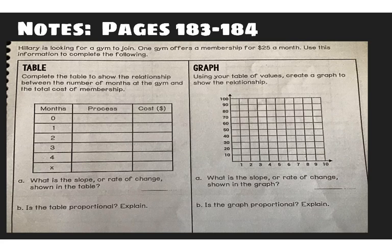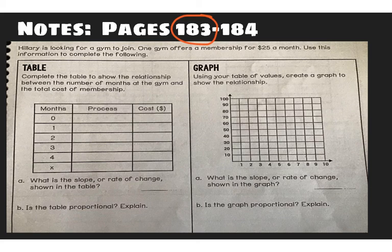Okay, let's try a problem with this. So this is also on page 183, just at the bottom. It says, Hillary is looking for a gym to join. One gym offers a membership for $25 a month. Use this information to complete the following. So let's do the table first. Complete the table to show the relationship between the number of months at the gym and the total cost of membership.